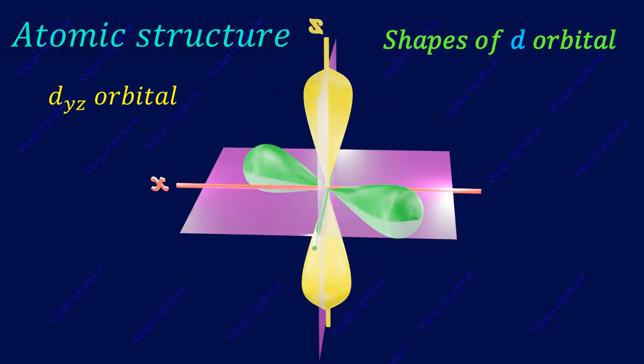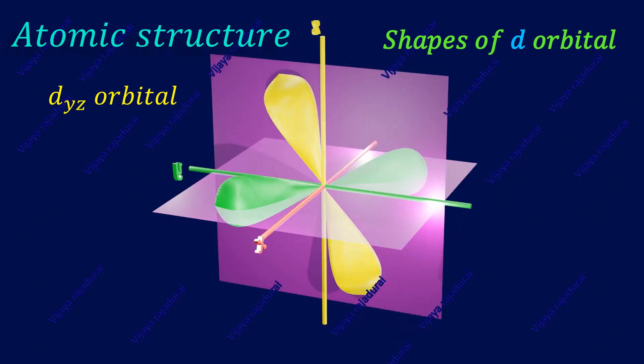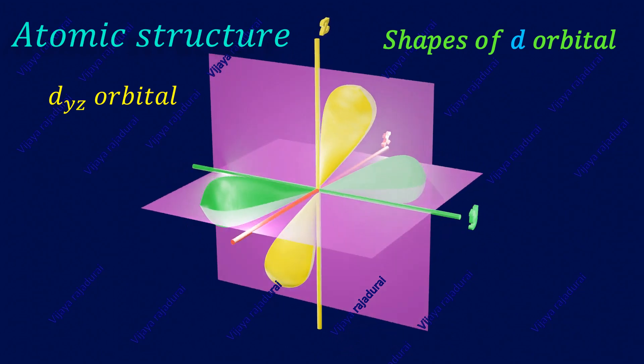In the dyz orbital, the lobe is oriented in between the y and z axis.